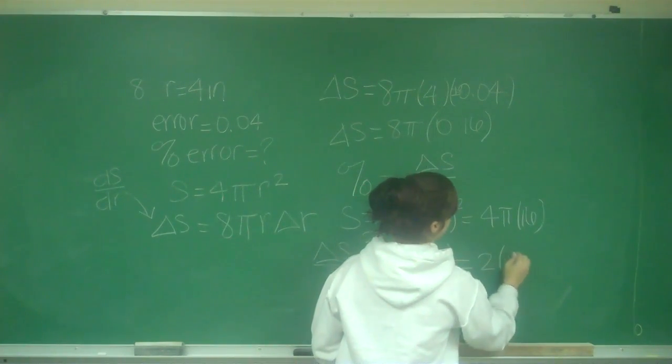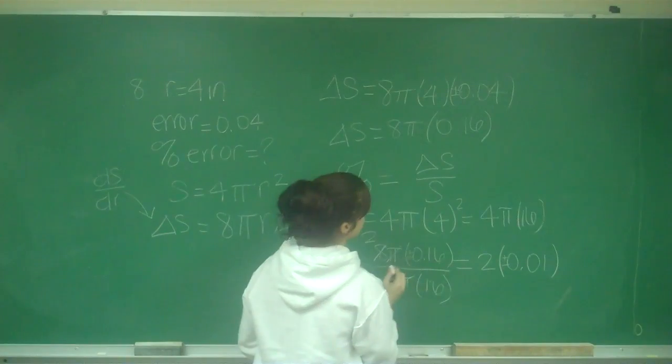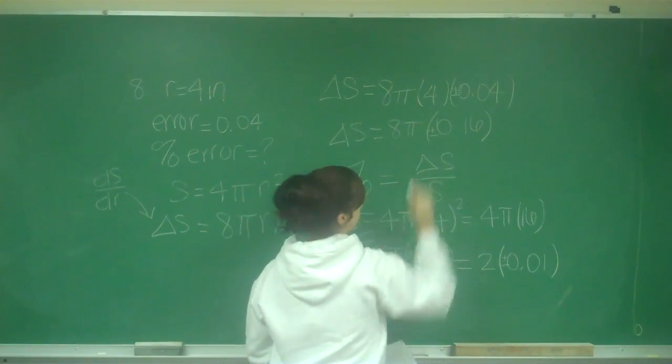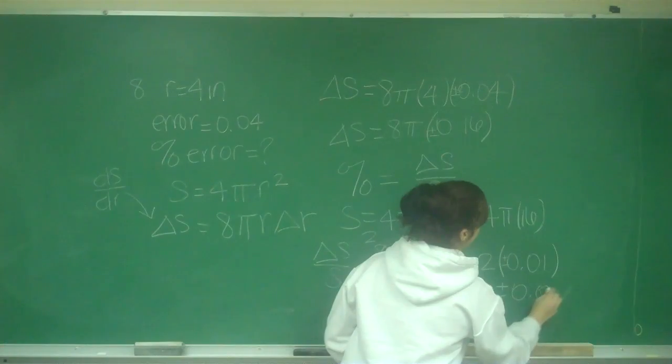So I have 2 times 0.01. We still have a plus or minus, and that becomes plus or minus 0.02.